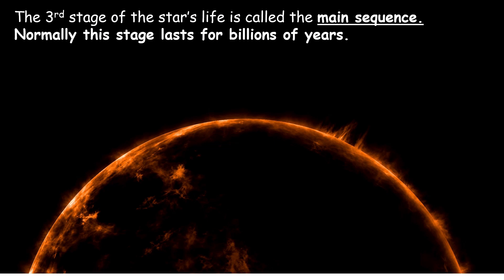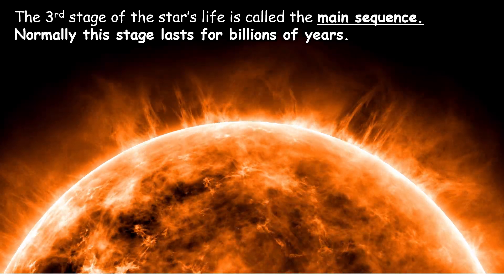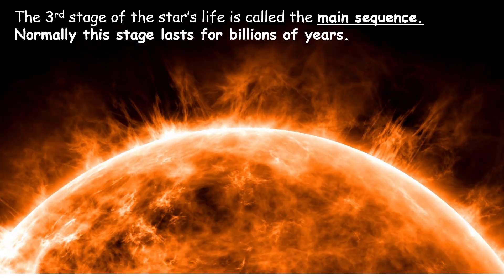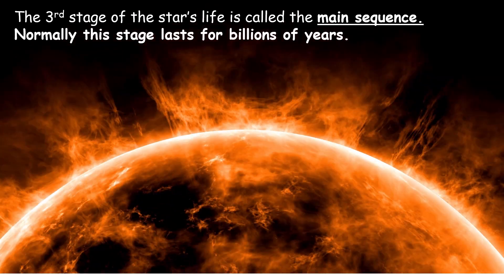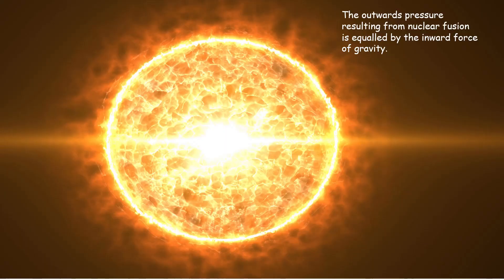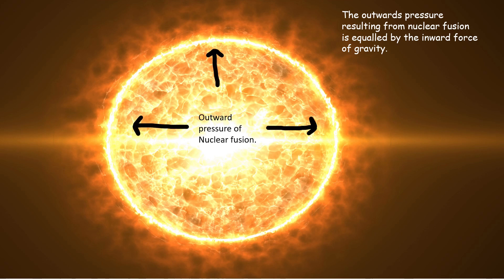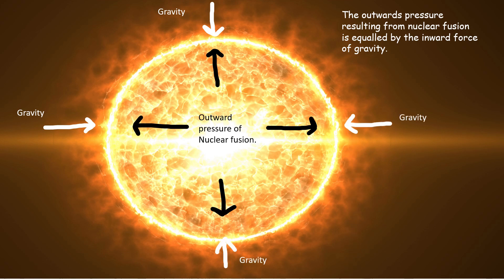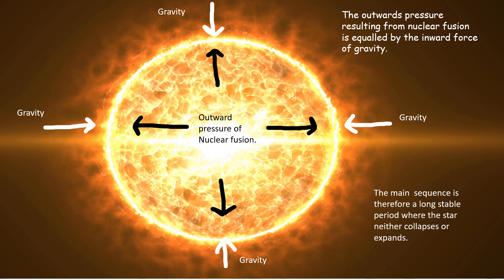The third stage of a star's life — the longest stage — is called the main sequence. Normally, this stage lasts for billions of years, but in very big stars they burn through the fuel quickly, and their main sequence is shorter. The nuclear fusion in the star's core creates an outward pressure, shown here by the black arrows. This outward pressure is equaled by the gravitational attraction trying to collapse the star. Therefore, as these forces are equal, the star neither collapses nor expands — it stays stable.